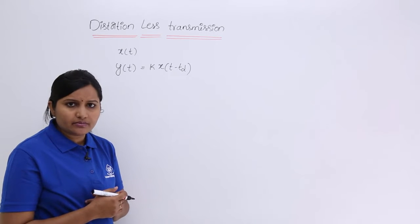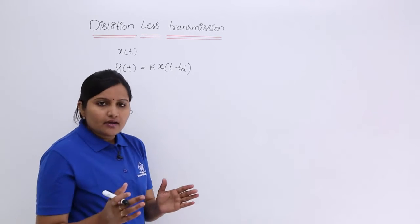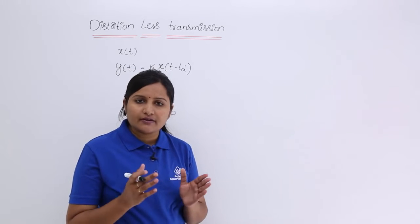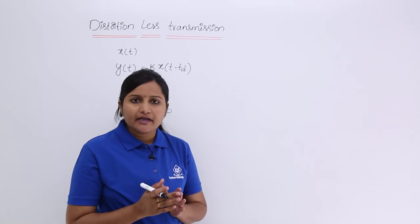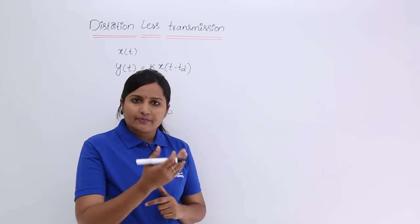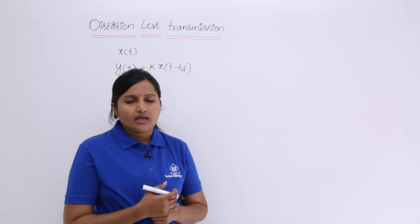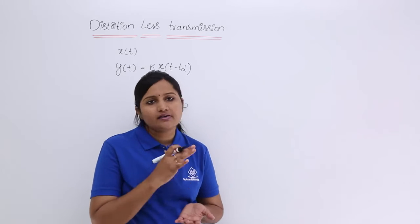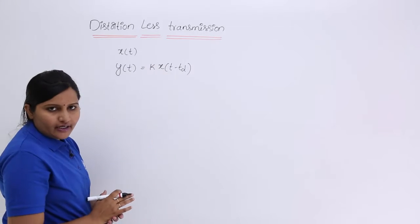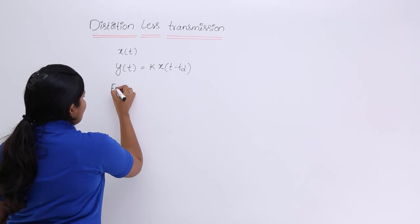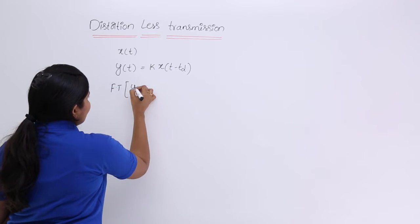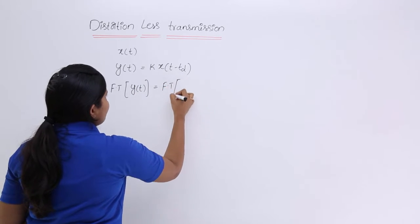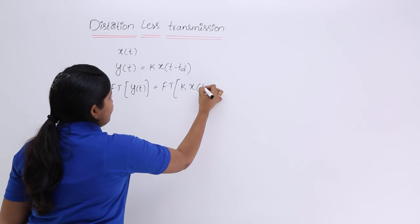To calculate the amplitude response and phase response of the system, we need to go to the frequency domain. To go from the time domain to the frequency domain, we consider the Fourier transform. So here I am going to take the Fourier transform on both sides: the Fourier transform of y(t) equals the Fourier transform of K · x(t - TD).